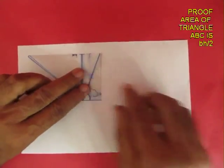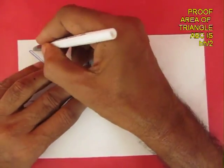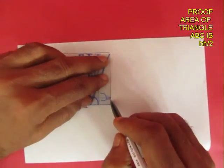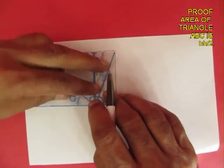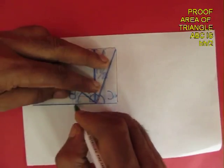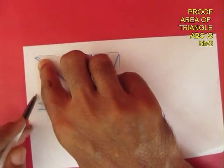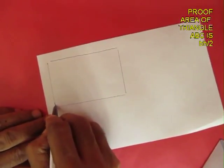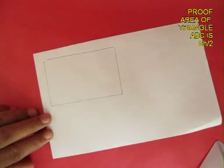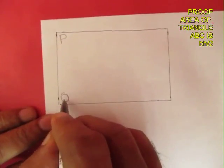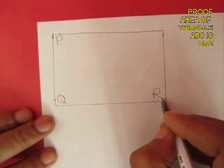To prove this, draw the external boundary of the rectangle on a plain piece of paper. So you get a rectangle of the same size. Name this rectangle as PQRS.